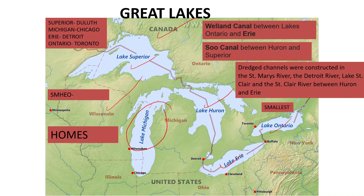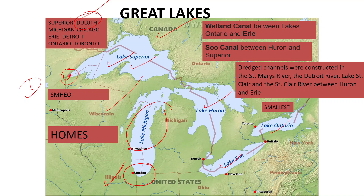The important towns located on the coast of these lakes are as follows. Duluth is a town in the USA located on the coast of Lake Superior. On the coast of Lake Michigan we have Chicago, which is a very important city of the United States of America.